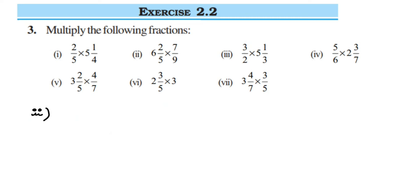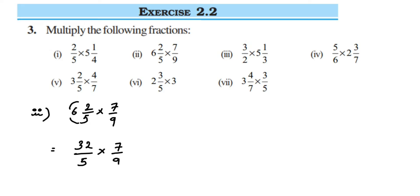Next, the second sub-question: 6⅖ multiplied by 7/9. Same thing - open the mixed fraction: 6 times 5 is 30, plus 2 is 32, so 32/5 multiplied by 7/9. We cannot cancel any numbers here, so multiply: 32 times 7 is 224, and 5 times 9 is 45, giving 224/45.